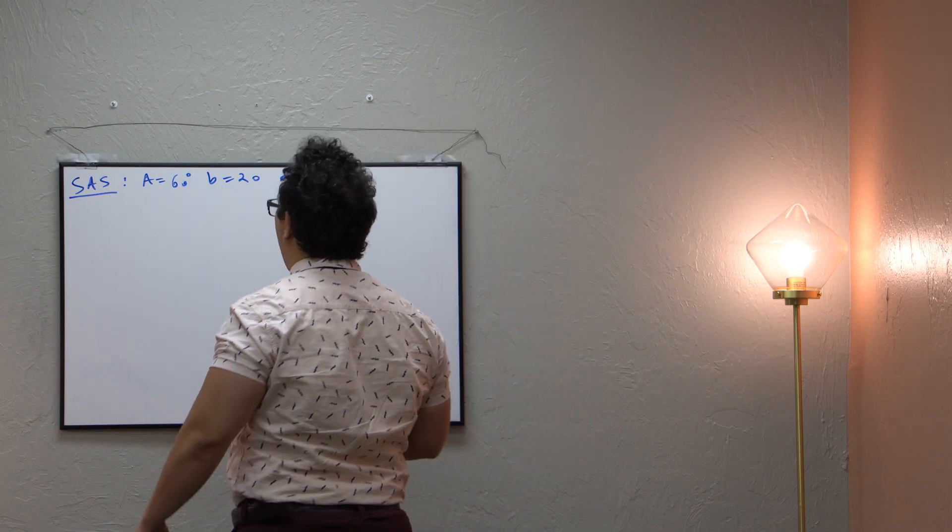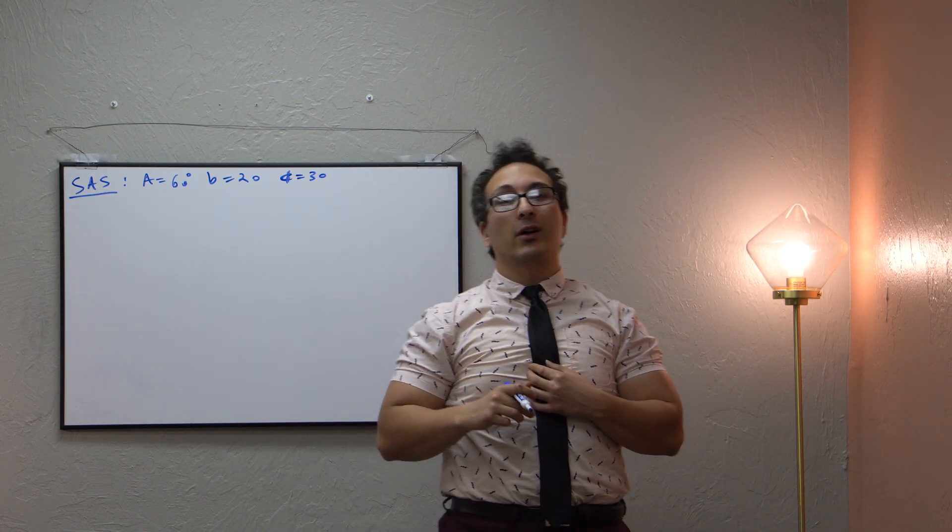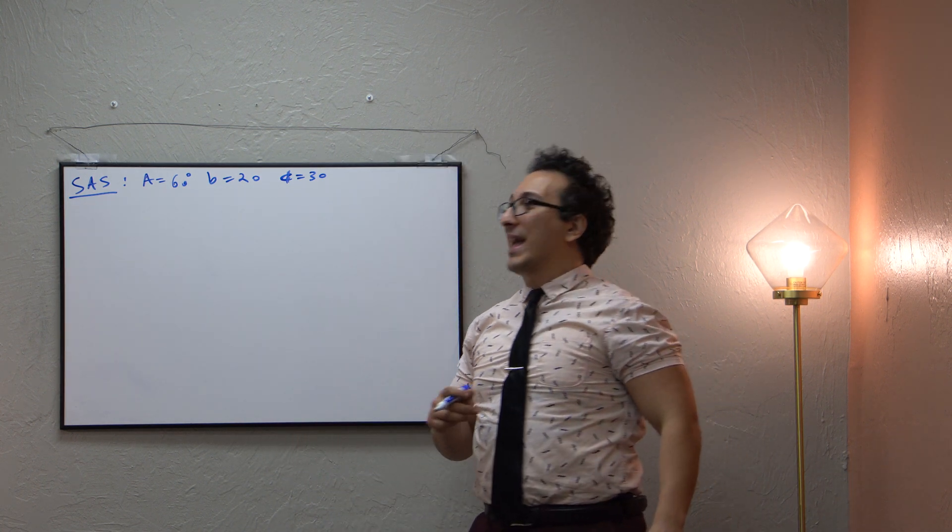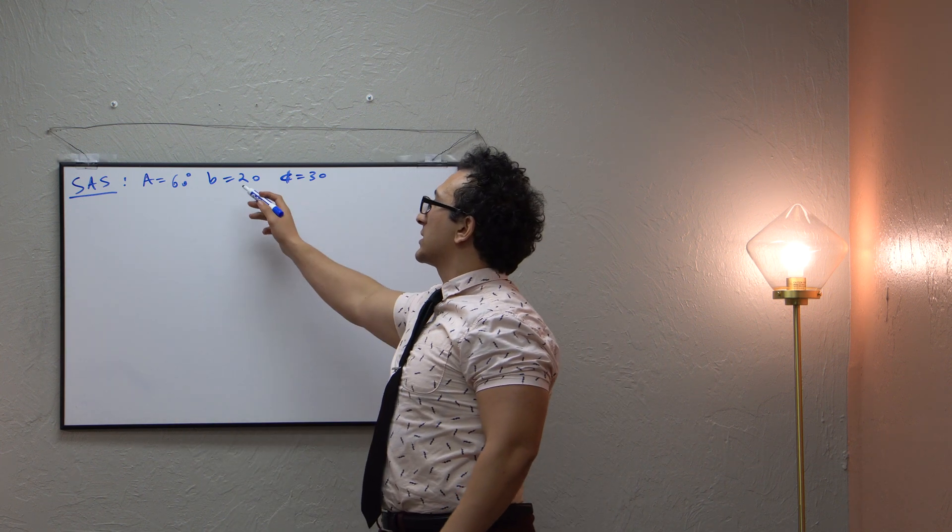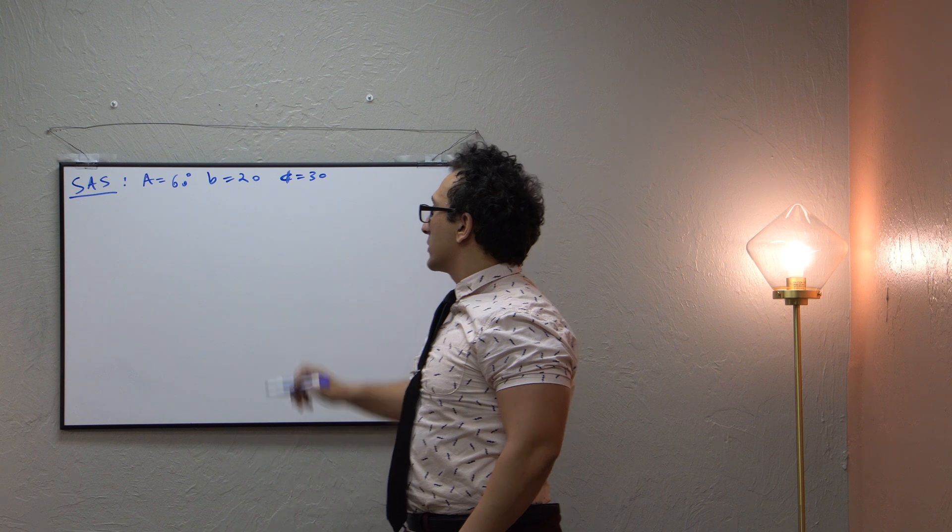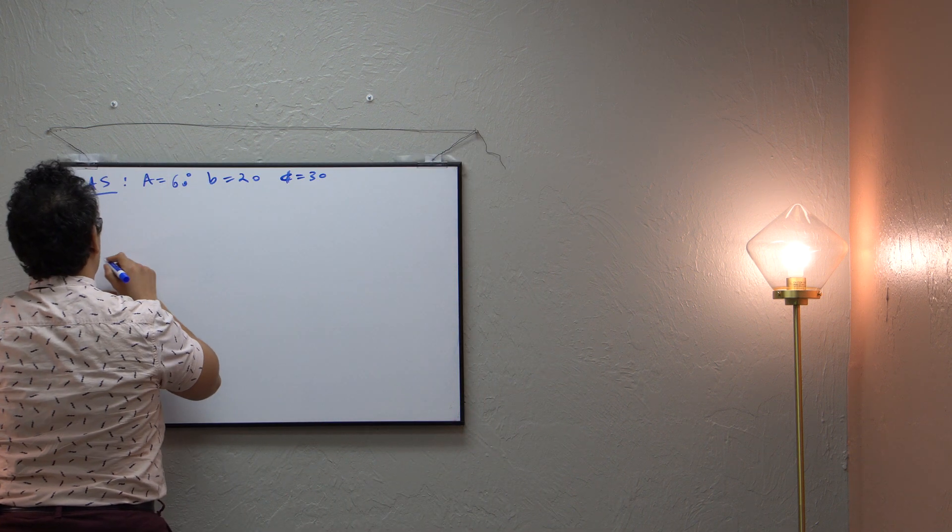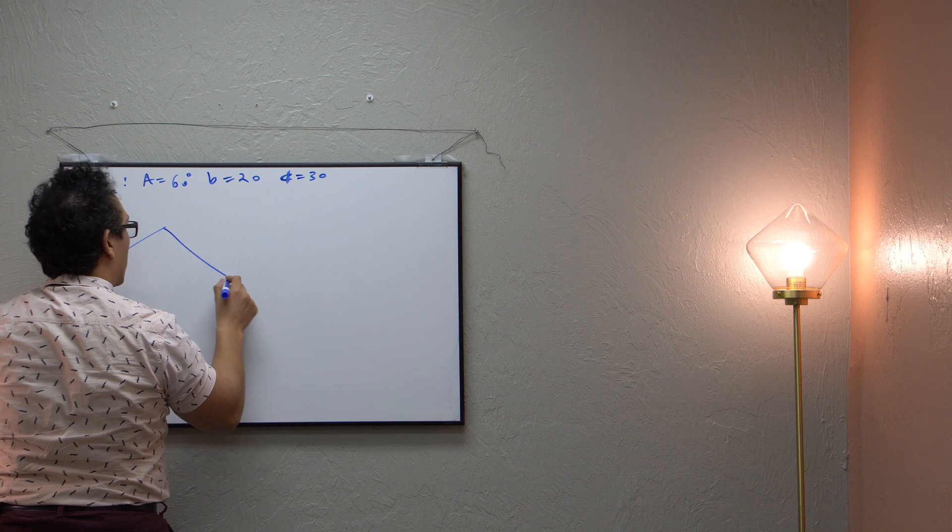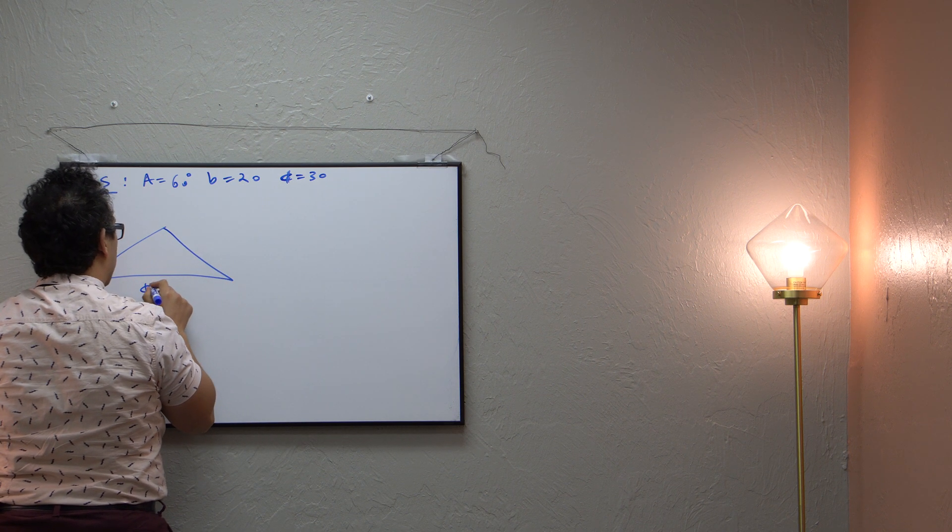Hello! Now we're going to be applying the law of cosines to a situation where it's SAS. You're given a side, an angle, and another side. So our angle A is 60 degrees, our side length B is 20, and we have some side length little c being 30. So let's call this little c.